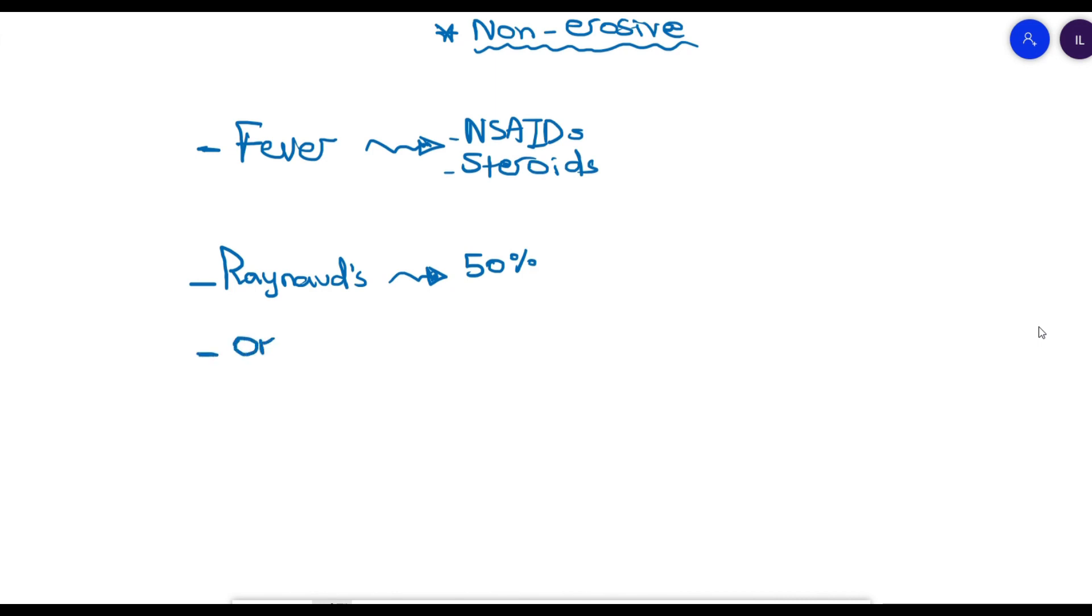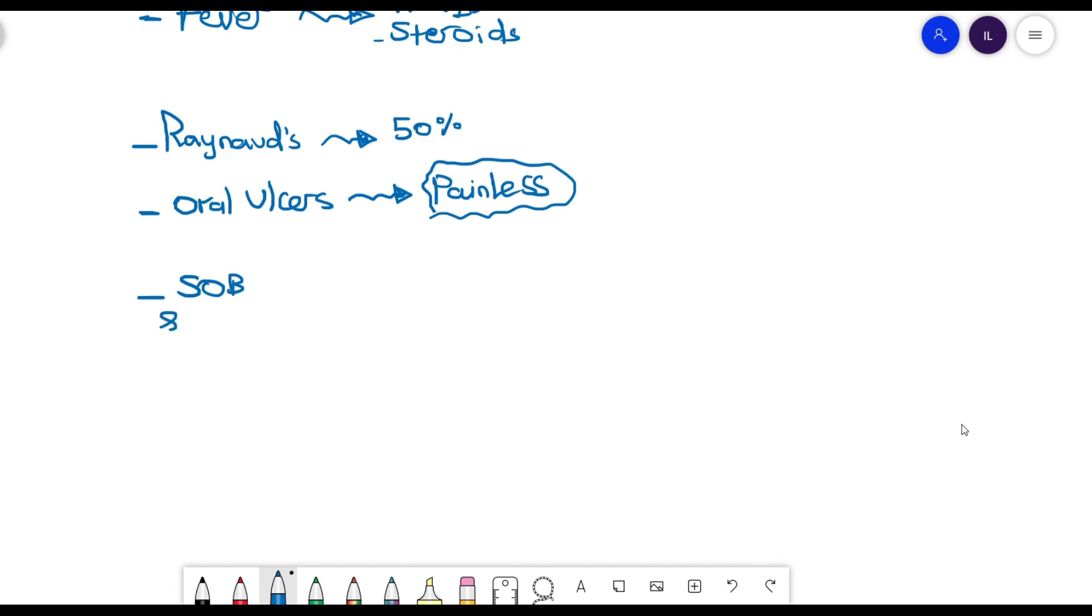The oral ulcers is an important symptom that we need to look for, and usually the patient has painless ulcers compared to aphthous ulcers. If the patient has a history of SLE and they present with shortness of breath or chest pain, you have to think about the cardiopulmonary involvement regarding SLE.